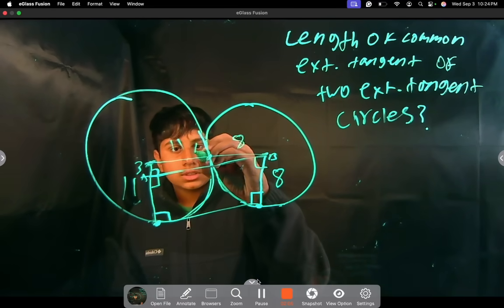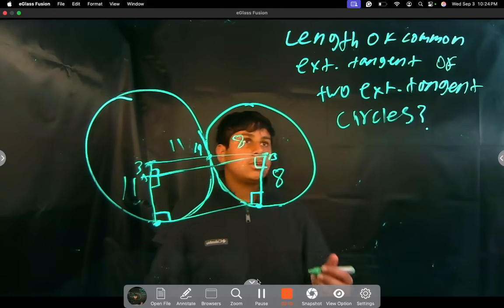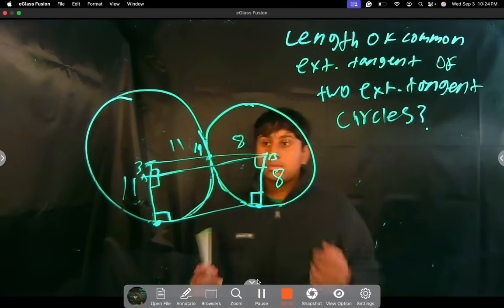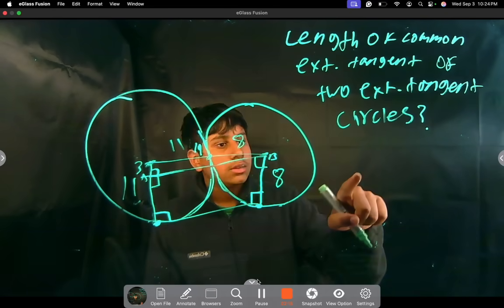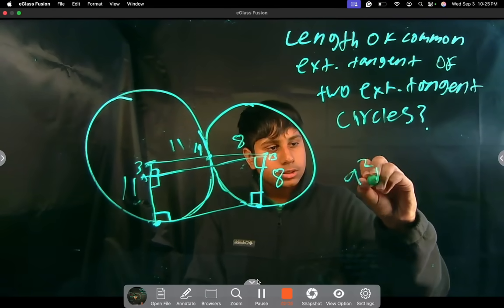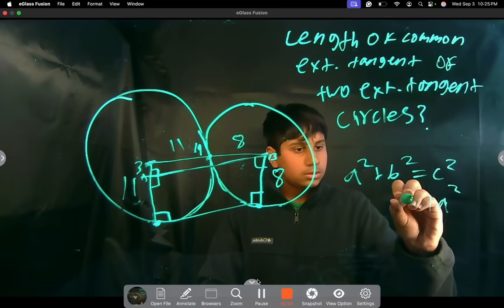And the hypotenuse is 19 because if we had the radii going past the circle, since they're externally tangent, that makes our job easier. So we know it's 19. So now we can just apply the Pythagorean theorem.